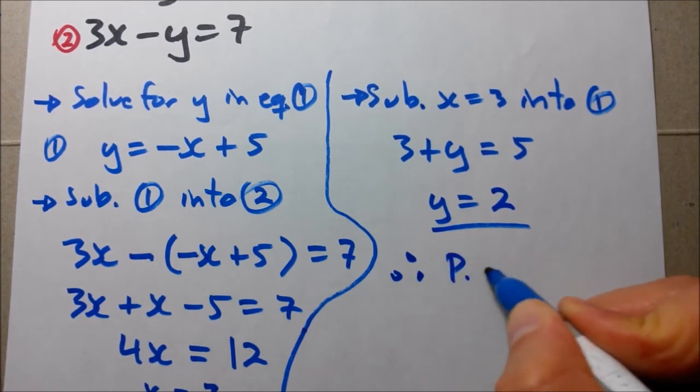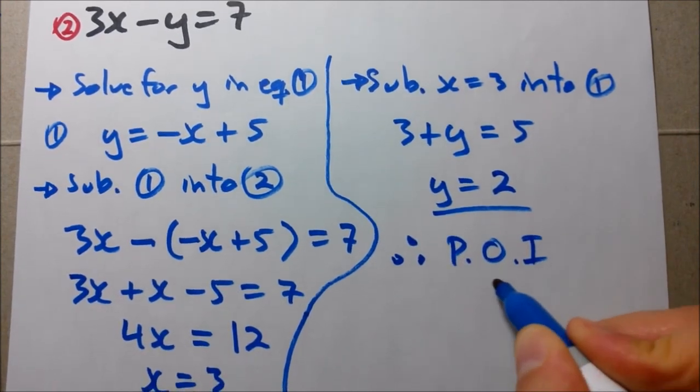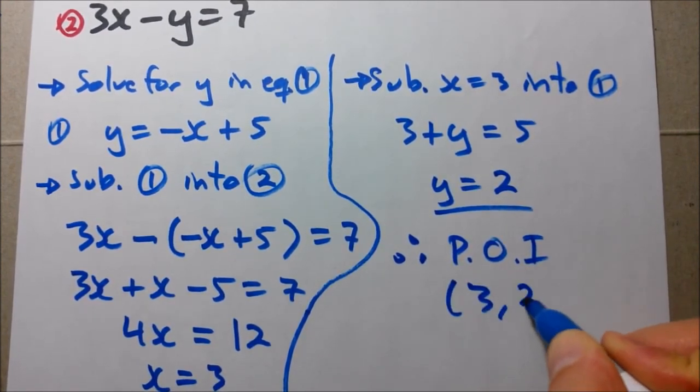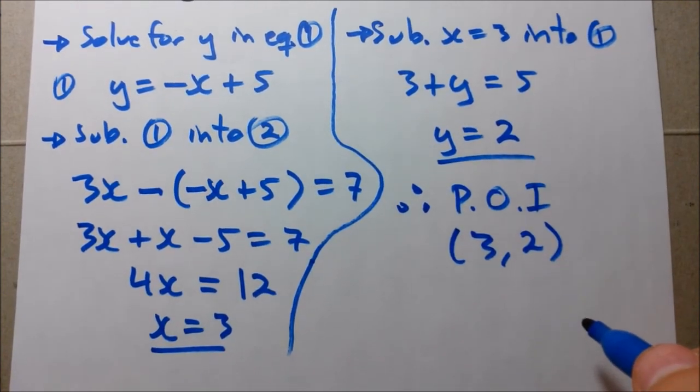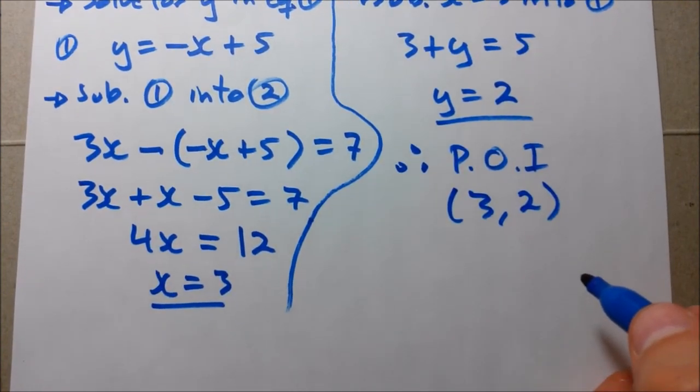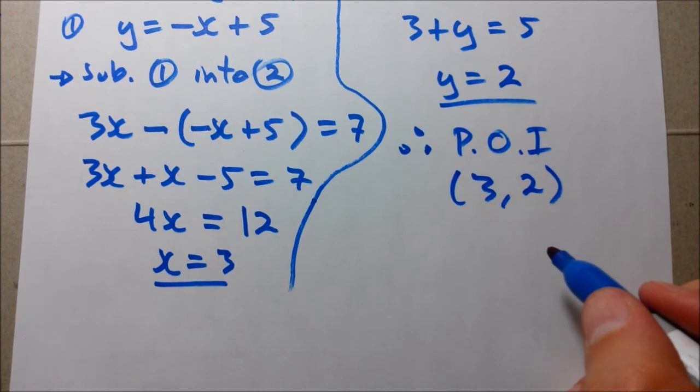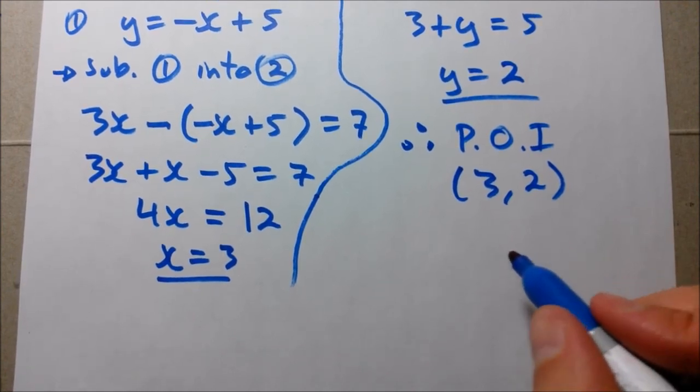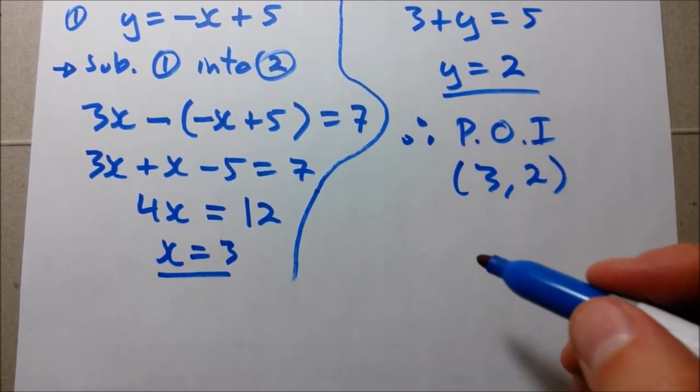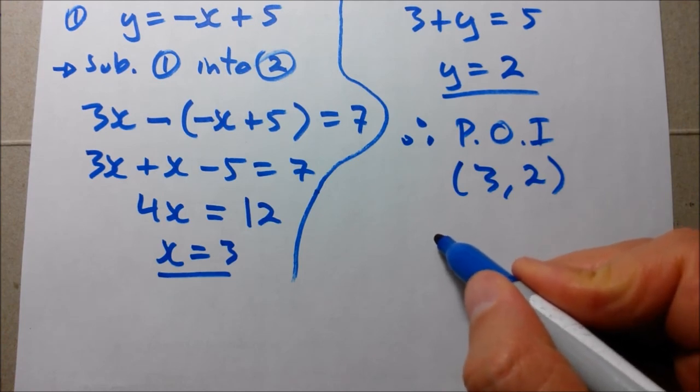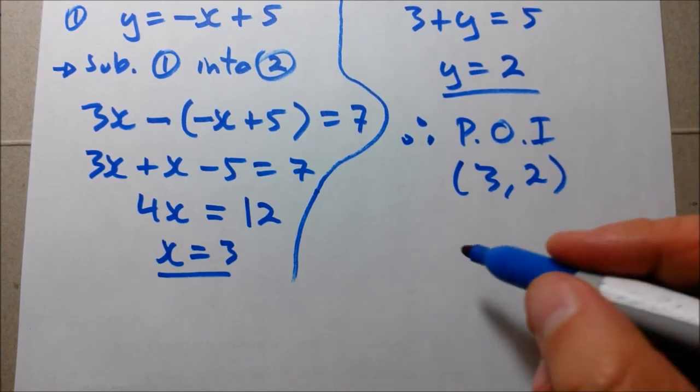Therefore, our point of intersection is 3 comma 2. Now, once again, this question is not asking to sketch something, but I'll do a sketch for explanation's sake. Or you can do a sketch on your own as well.